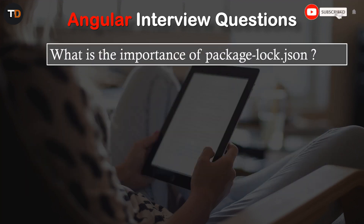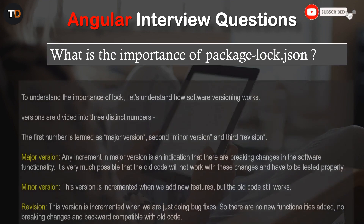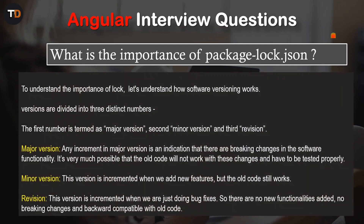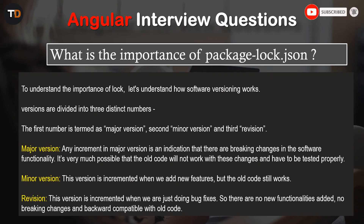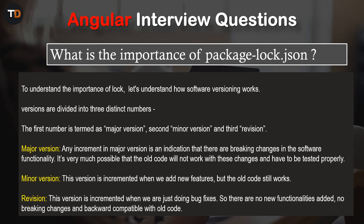What is the importance of the package-lock.json file? To understand this, let's understand how software versioning works. Versions are divided into three distinct numbers: the first number is the major version, the second is the minor version, and the third is the revision. An increment in the major version indicates that there are breaking changes in the software functionality.